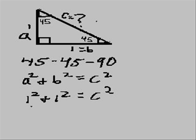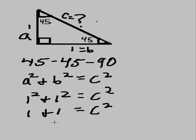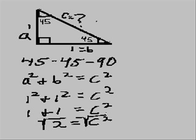Now what do we do? Well, one squared is one and one squared is one, so that gives me one plus one. One plus one is two, so two is equal to c squared. Take the square root of both sides and we get radical two.